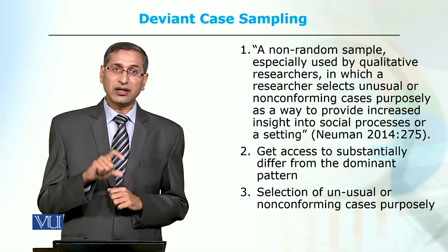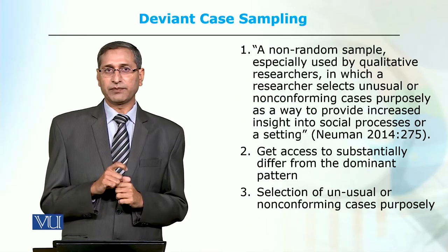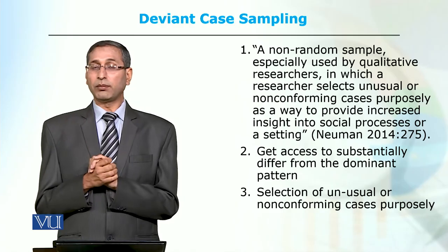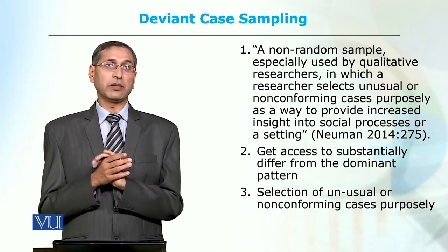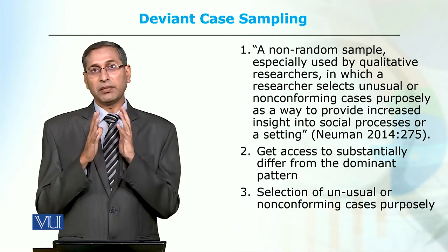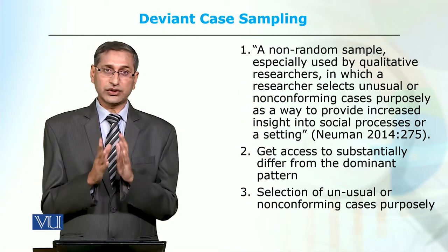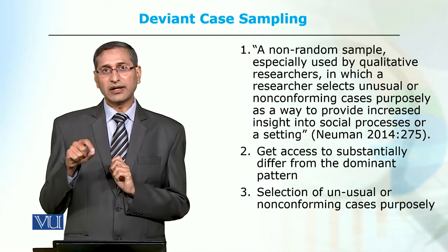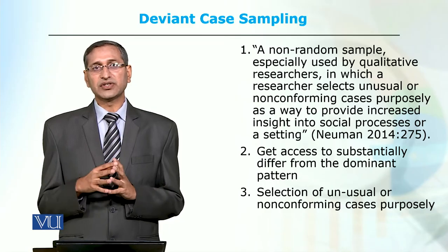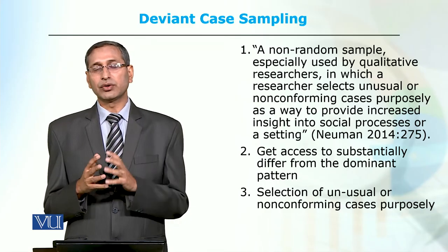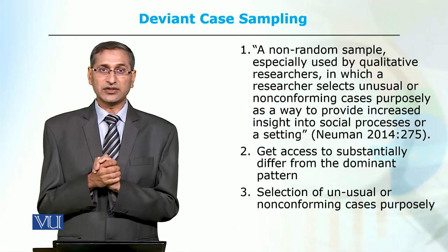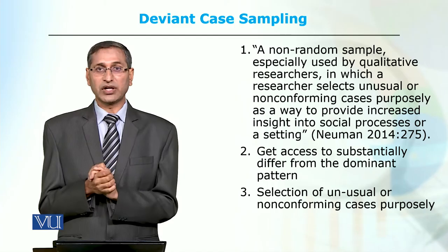ایک اور بڑا interesting case یہ ہے کہ جو highly radicalized population ہیں، جو suicide bombers ہیں، وہ ایک قسم کے extreme cases ہیں - no normal human wanted to become a suicide bomber. Why they become suicide bombers - اس کو study کرنا ضروری ہے کیونکہ یہ بھی society کے اندر outliers ہیں جو نہ صرف اپنی زندگی کا خاتمہ کرنا چاہتے ہیں بلکہ دوسروں کی زندگی بھی لینا چاہتے ہیں یا society سے بدلہ لینا چاہتے ہیں۔